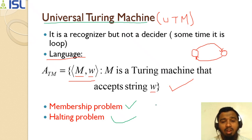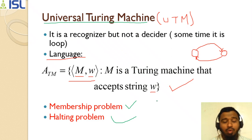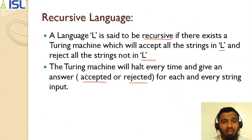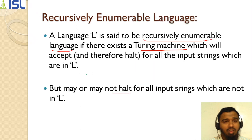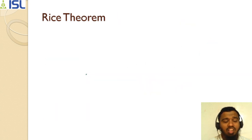That is decidable and undecidable. Decidable means a solvable problem. Undecidable means a not solvable or unsolvable problem. So this is about the Turing machine. Till now we have finished recursive language, recursively enumerable language, and universal Turing machine. Now we will see Rice's theorem.